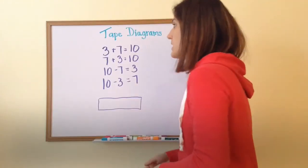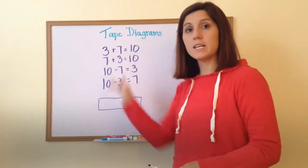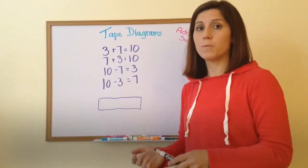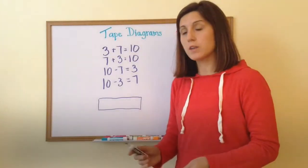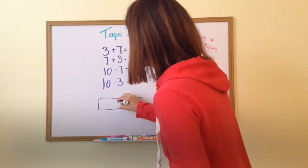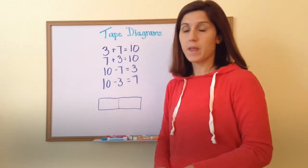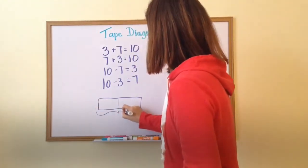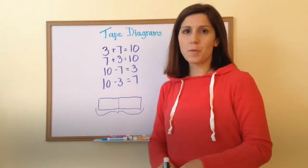Now for this case I have three numbers in each equation. I have two parts and one whole. Since I have two parts, I'm going to break my tape diagram into two boxes and then I'm going to draw the bottom part to show my whole.